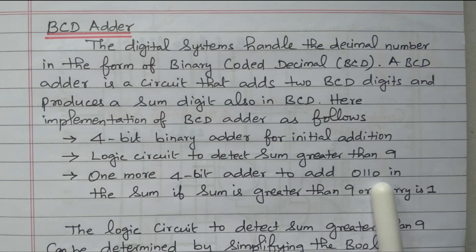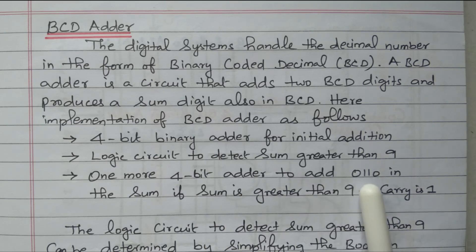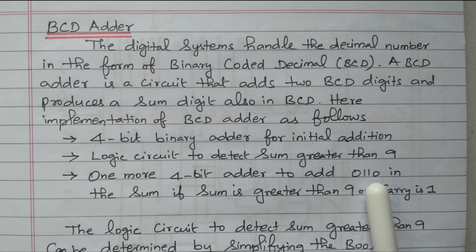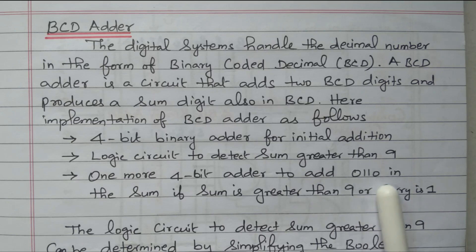In binary, eight, four, two, one — eight is 0, four is 1, two is 1, one is 0 — wait, four plus two equals six. We need to add the decimal equivalent of six, that is 0, 1, 1, 0, in the sum.